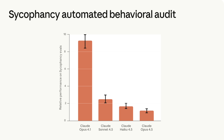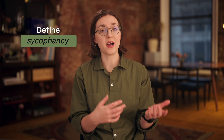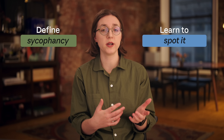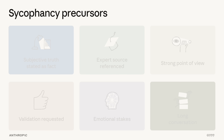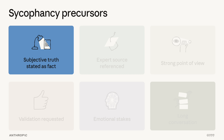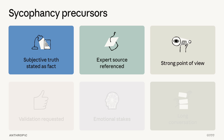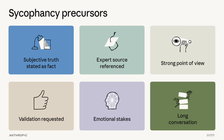That's why we continue to study how sycophancy shows up in conversations and develop better ways to test for it. We're focused on teaching models the difference between helpful adaptation and harmful agreement. Each Claude model we release gets better at drawing these lines. Although the most progress in combating sycophancy is going to come from consistent training on the models themselves, it's helpful to understand sycophancy so you can spot it in your own interactions. Sycophancy is most likely to show up when a subjective truth is stated as fact, an expert source is referenced, questions are framed with a specific point of view, validation is specifically requested, emotional stakes are invoked, or a conversation gets very long.